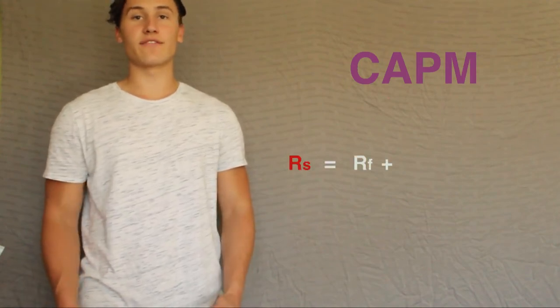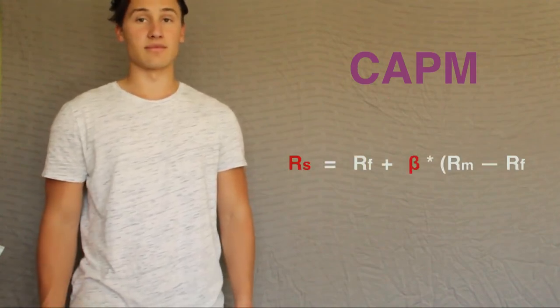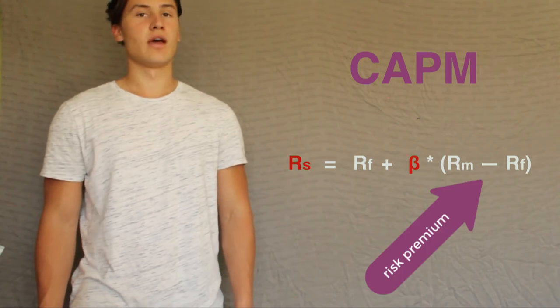Beta ties into our capital asset pricing model. An asset's expected return is the risk free rate plus beta times the market's risk premium, which is the return of the market minus the risk free rate.